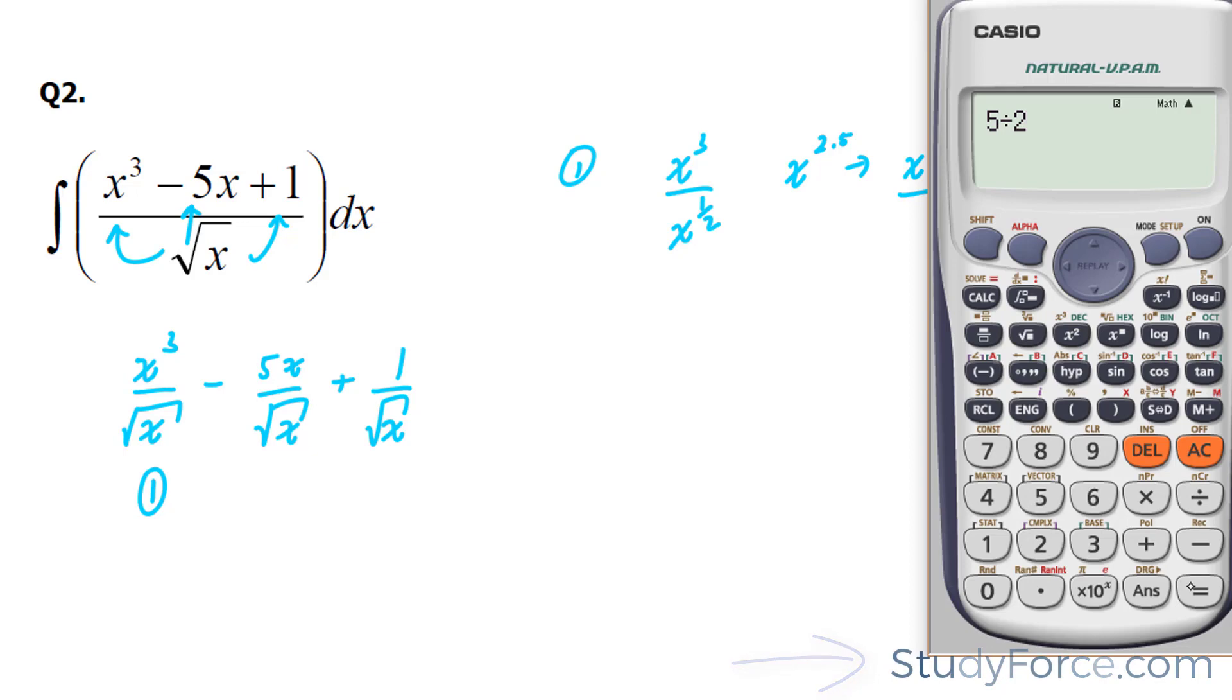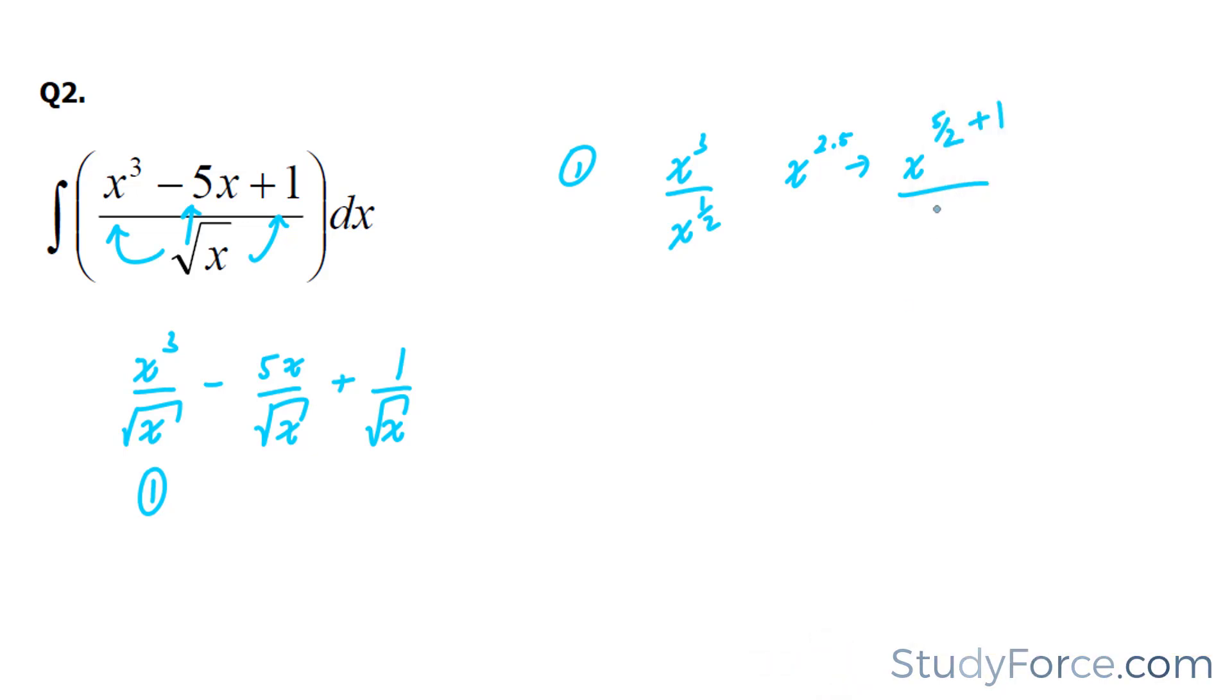5 over 2 plus 1 gives us 7 over 2. So we're going to place 7 over 2 at the bottom here. And what we end up with is 2x to the power of 7 over 2 over 7.